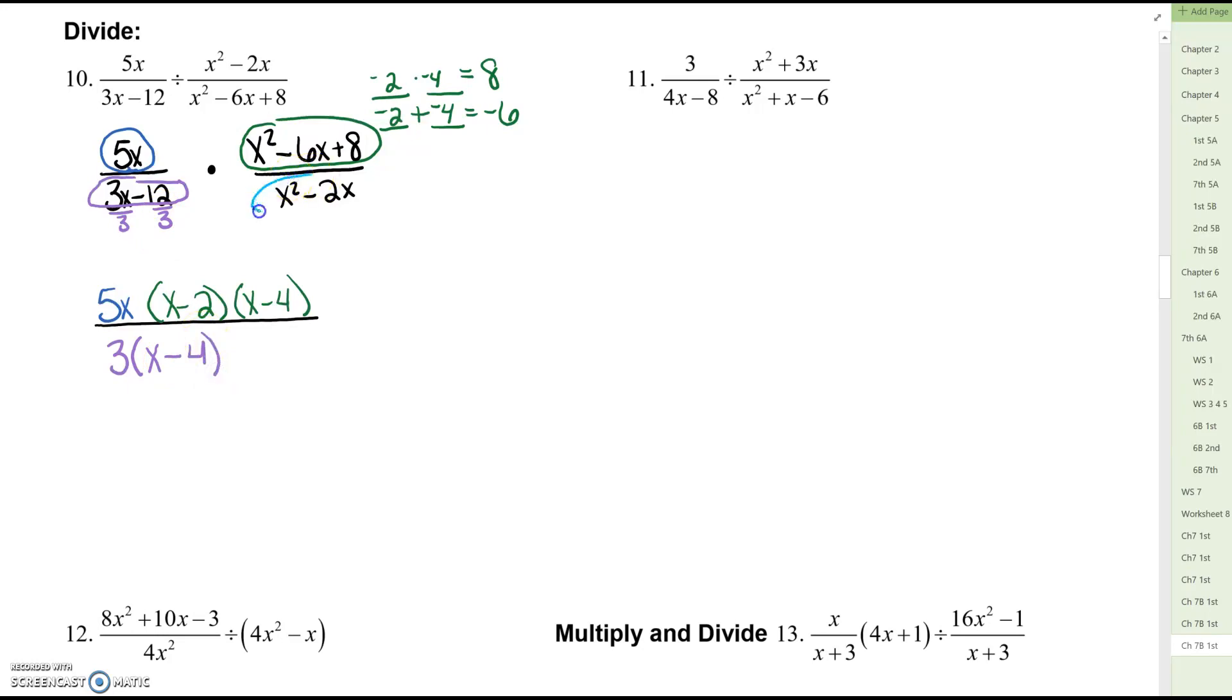And then we need to factor x squared minus 2x. Again this one is not difference of two squares. It's a greatest common factor problem. What do x squared and 2x have in common? x squared divided by x is x. Negative 2x divided by x is negative 2.